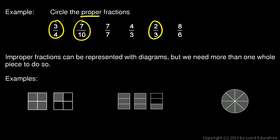2 over 3, though, that's a proper fraction. Smaller number on top. And 8 over 6, that's an improper fraction. So there's your answer.